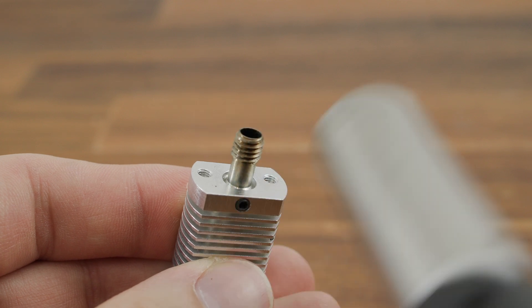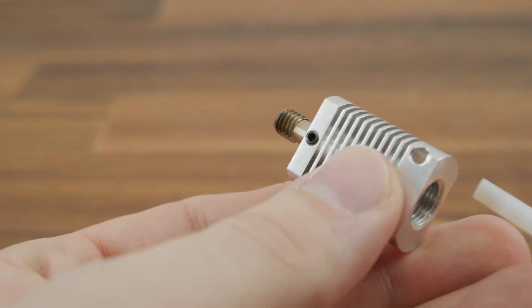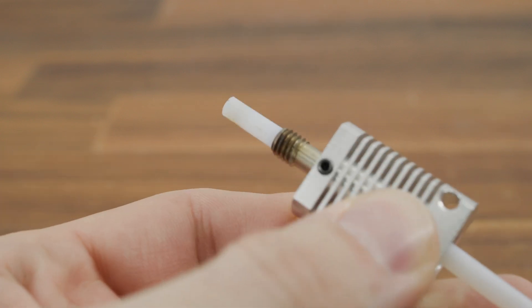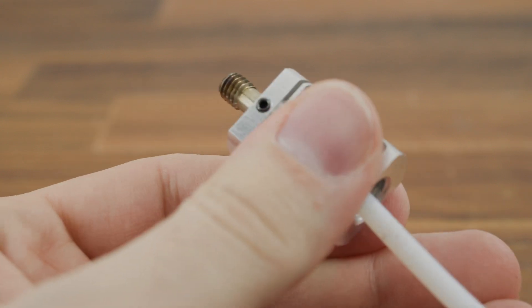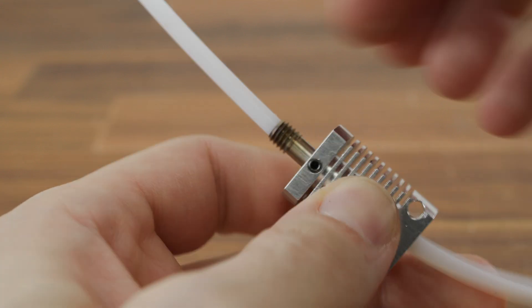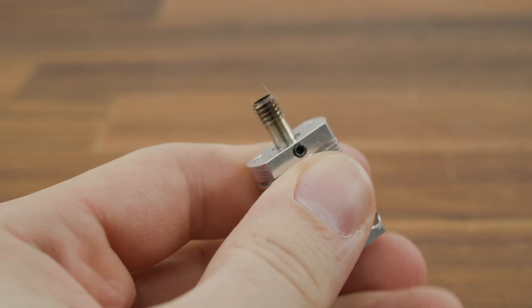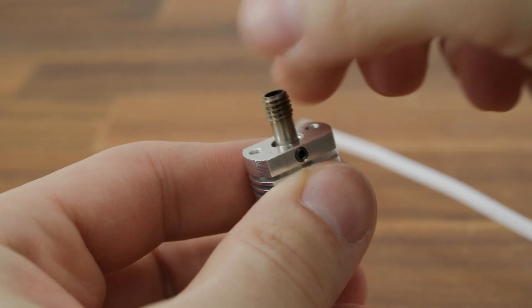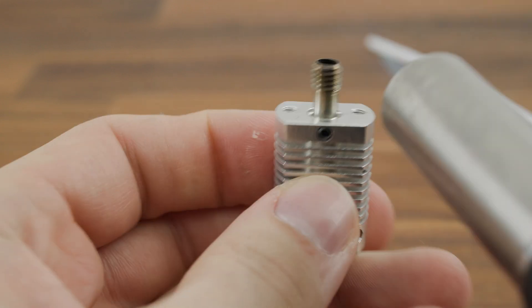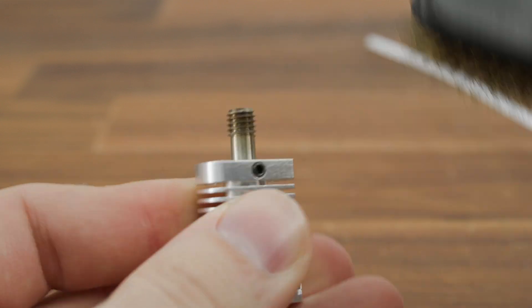Now we can clean the heat brake from the filament residue. The lighter and PTFE tube will do the job perfectly. The PTFE tube should be able to be pushed back and forth through the heat brake. Baked on filament on the heat brake can be removed with the lighter than a wire brush.